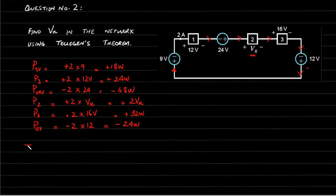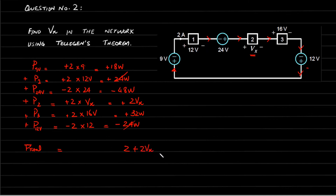Now we have to find out P total, the sum of all the powers, and set it equal to zero. So: 18 plus 24 minus 48 plus 32 minus 24 plus 2VX equals zero. The 24s cancel out. 18 minus 48 plus 32 equals 2, so we have 2 plus 2VX equals zero. Therefore VX equals minus 2 divided by 2, equals minus 1 volt.